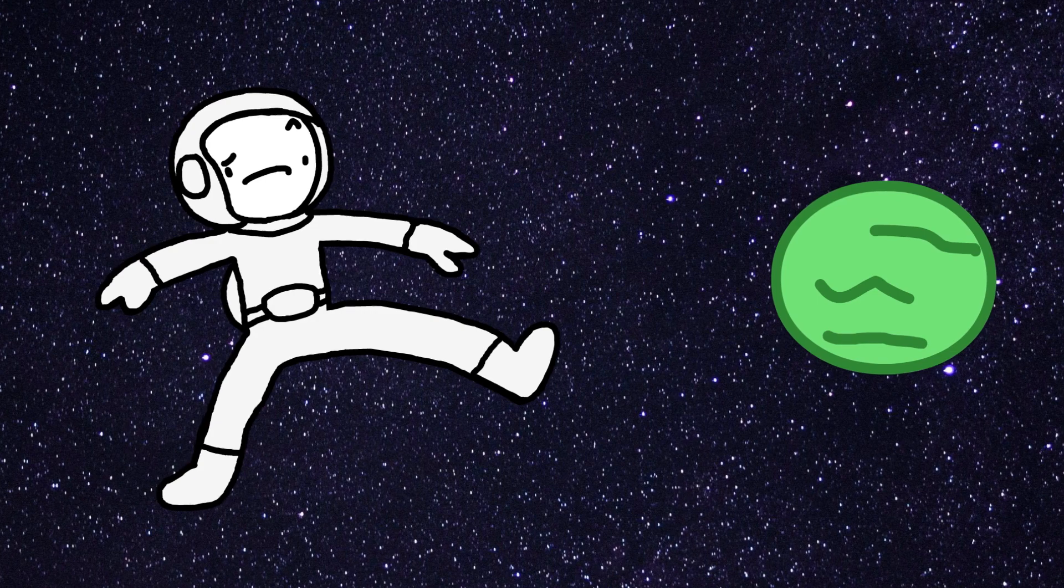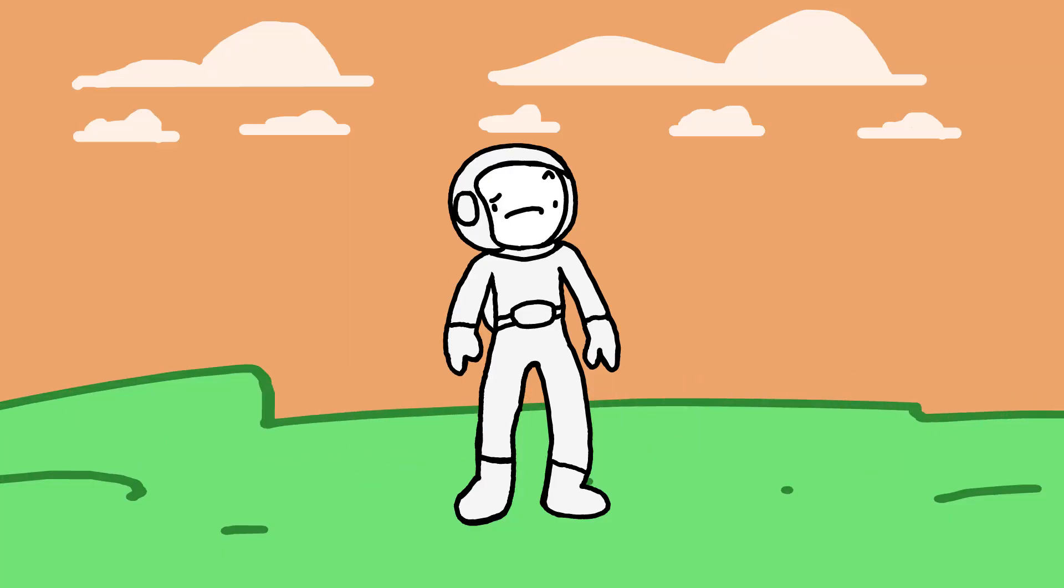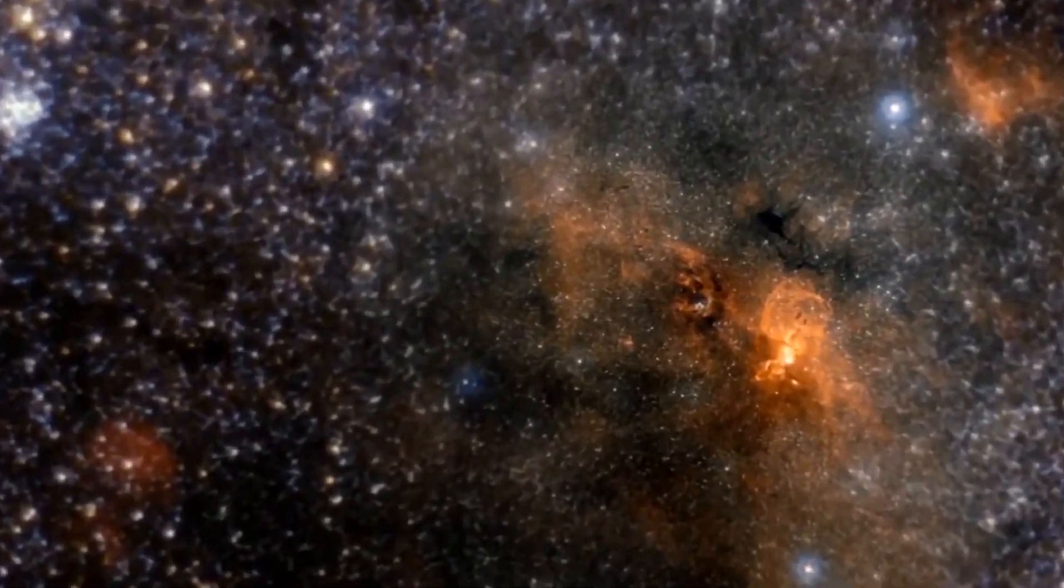The Fermi paradox - it highlights the contradiction between the apparent high probability of life and the fact that we still haven't found any evidence of alien life. What's up with that? Well, even though the universe is 13.7 billion years old...